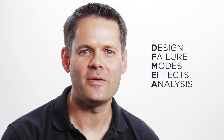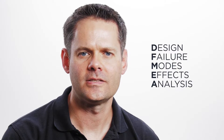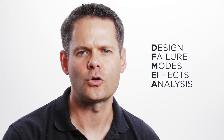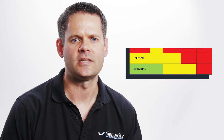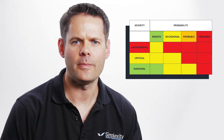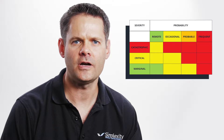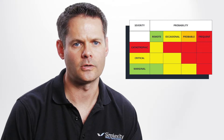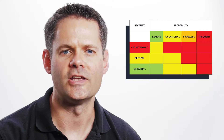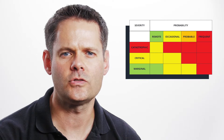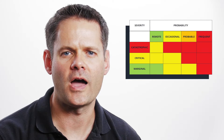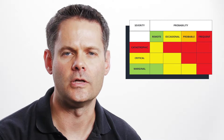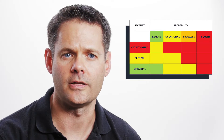In a DFMEA analysis, your team brainstorms all the possible failure modes. You then assess the probability that each failure mode will happen and the severity of the failure if each one were to occur. The highest risk items are those that are ranked both highly in likelihood and severity.